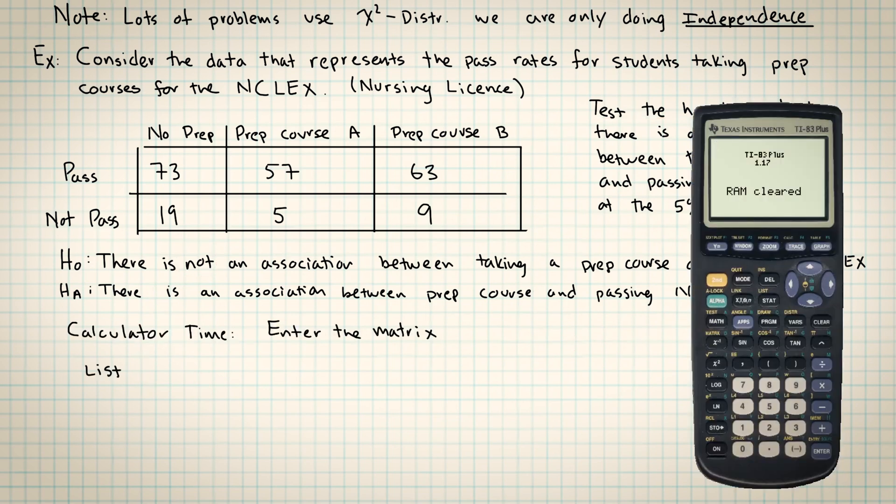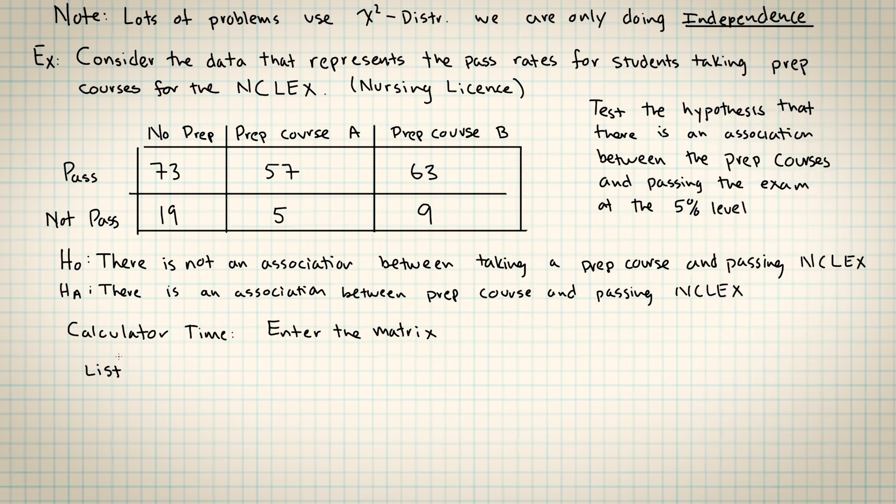Hypothesis tests for association. Of course, we have to put the data in the calculator. I know that you're really used to putting the data in the list, but this is going to be a little bit different. For chi-squared testing, we are going to put the data in the matrix, so we are not going to use the list this time.